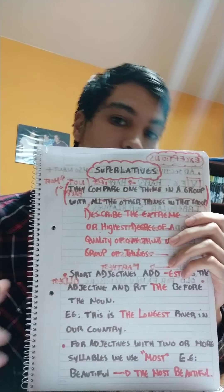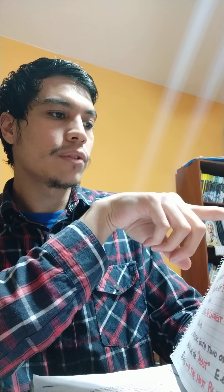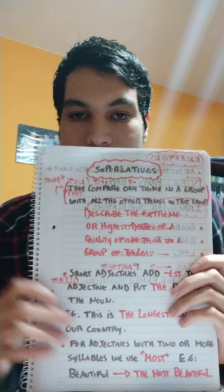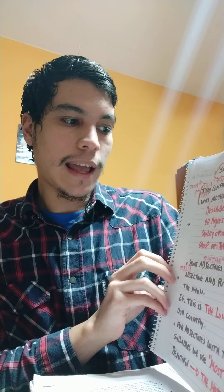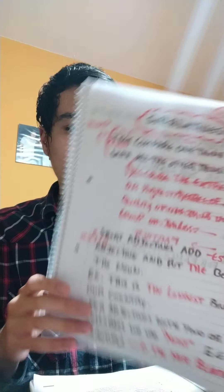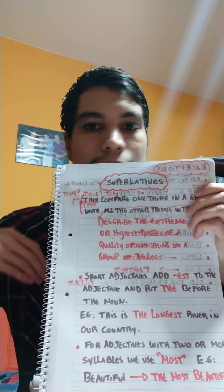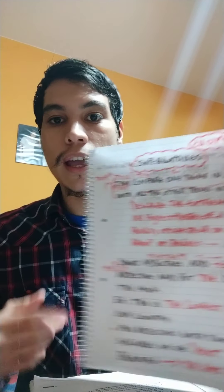Now, superlatives. They compare one thing in a group with all the other things in that group. They describe the extreme or highest degree of a quality of one thing in a group. El superlativo describe la cualidad más alta de algo o de alguien — el más inteligente, la más linda de todas, el más sabio.